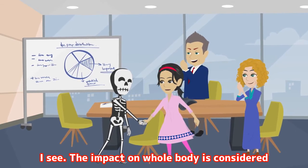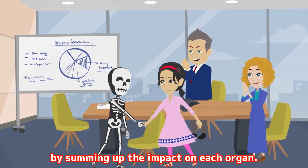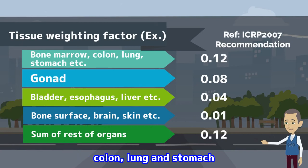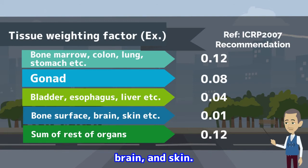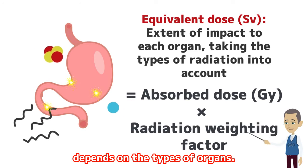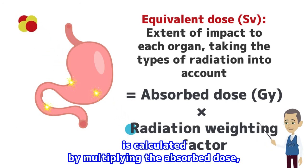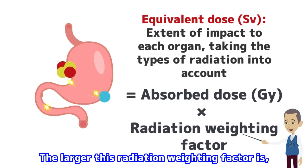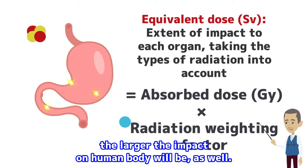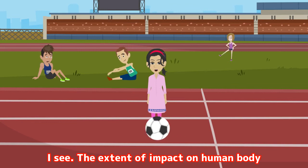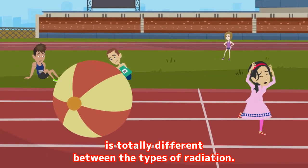I see. The impact on whole body is considered by summing up the impact on each organ. Correct. And the tissue weighting factors are presented in this table. For example, as you can see, bone marrow, colon, lung, and stomach are sensitive to radiation, compared with bone surface, brain, and skin. Okay, the extent of impact depends on the types of organs. By the way, the equivalent dose is calculated by multiplying the absorbed dose by the radiation weighting factor, which is determined specifically to the types of radiation. The larger this radiation weighting factor is, the larger the impact on human body will be. And these are examples of radiation weighting factor — alpha-ray causes impact on human body 20 times as much as gamma-ray, x-ray, and beta-ray. I see. The extent of impact on human body is totally different between the types of radiation.